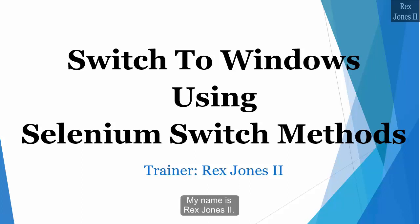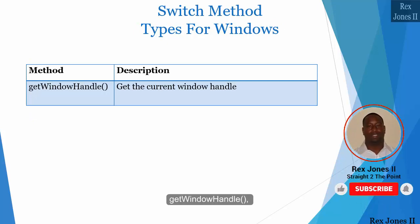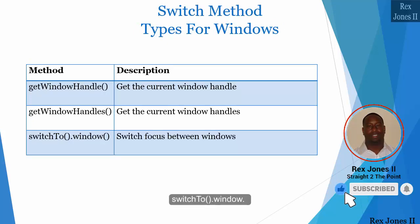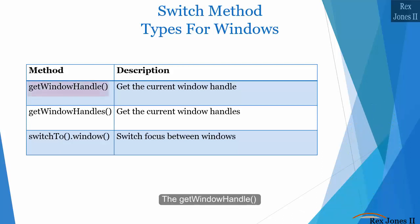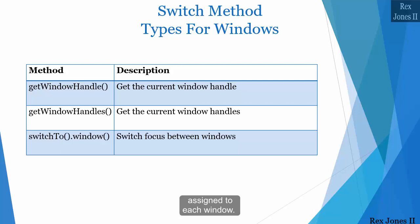Hello and welcome, my name is Rex Jones the Second. In this video we are going to switch to a window using three Selenium switch methods. Those three window methods are: get window handle, get window handles, and switch to window. The get window handle method gets the current window handle, and the get window handles method gets all the window handles. A window handle is a unique alphanumeric ID assigned to each window, and we use that unique ID for the third method, switch to window.